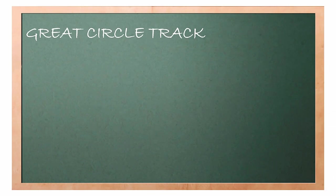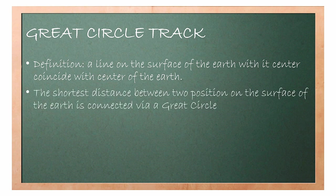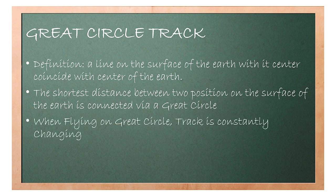The second concept we need to understand is the great circle. By definition, a great circle is a line on the surface of the Earth where the center coincides with the center of the Earth. The shortest distance between two positions on the surface of the Earth is connected via a great circle. When flying on a great circle track, heading is constantly changing. These are the three facts you need to remember about great circle.